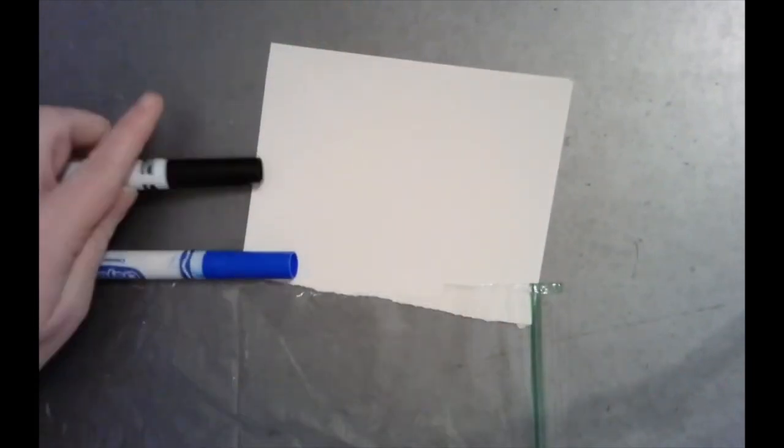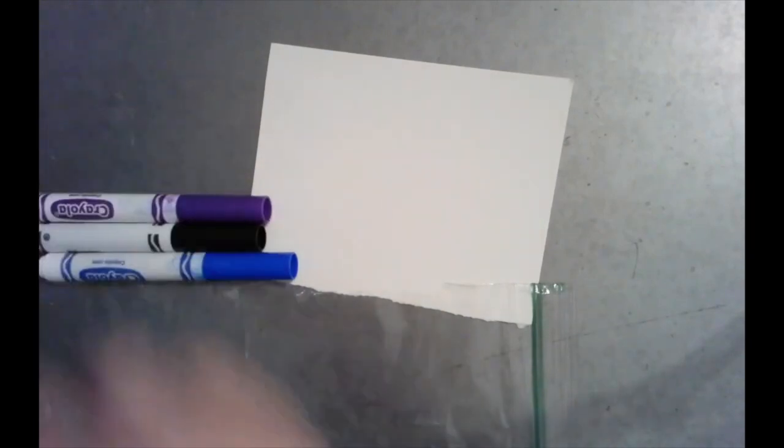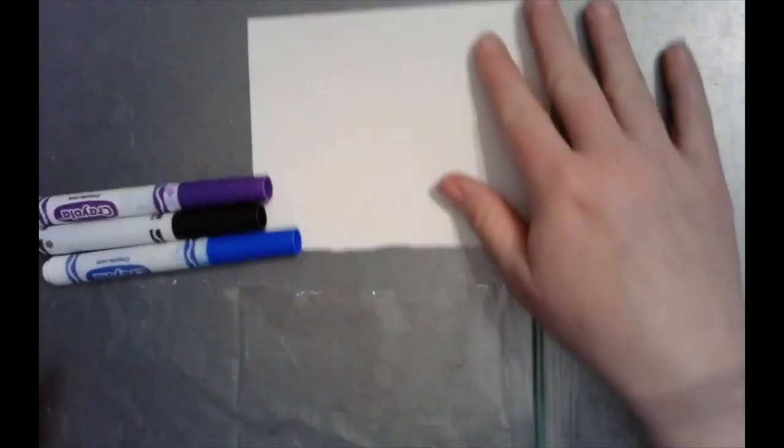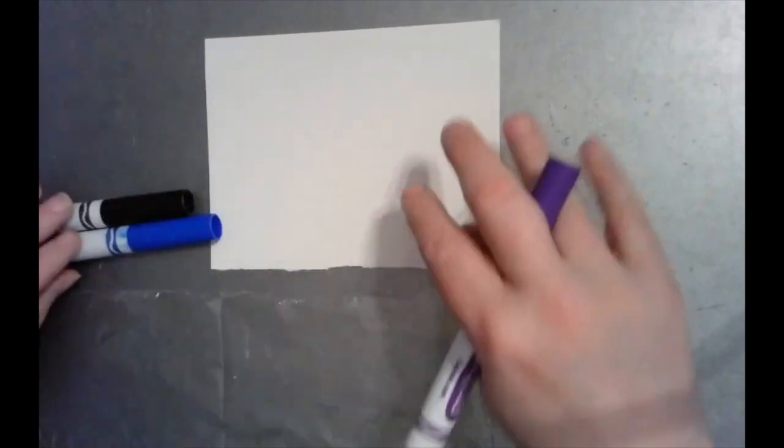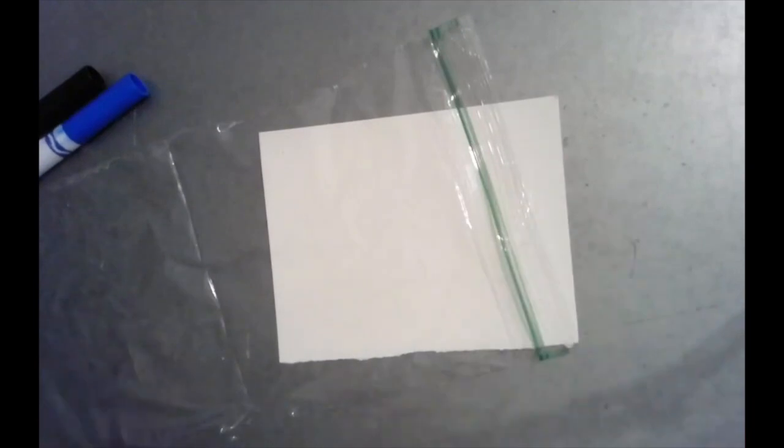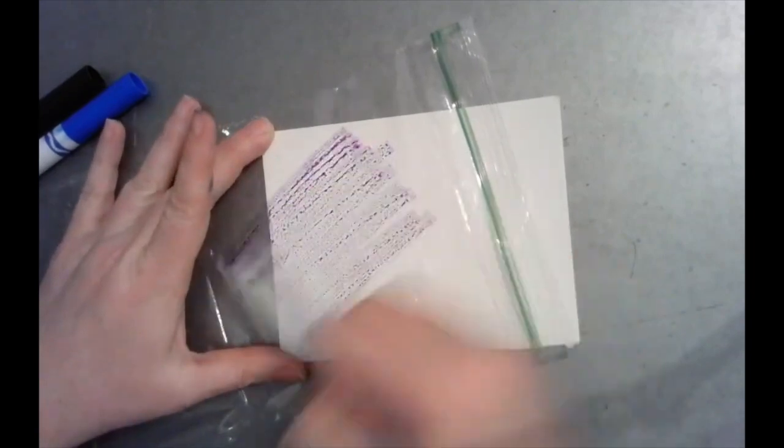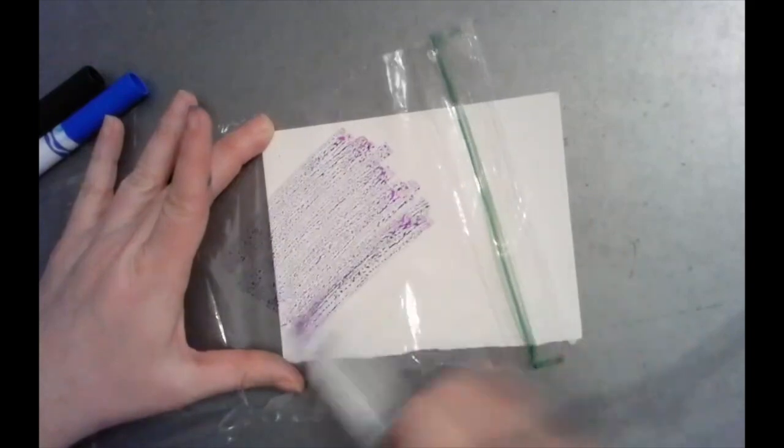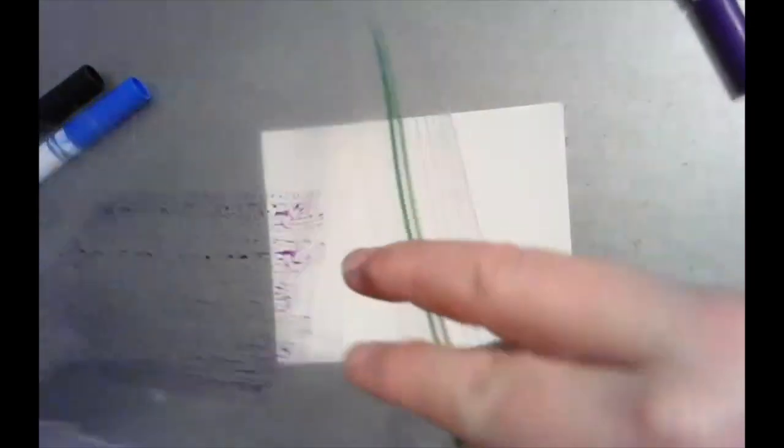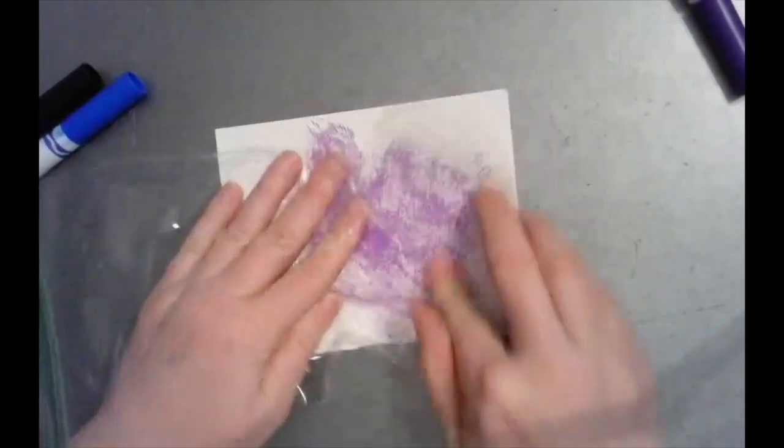We're going to use some washable markers. I'm going to use the blue, the black, and the purple. If you want to use green you can use green, but these are the colors I'm going to use today. We're going to start with the purple and this is not going to look pretty when we first start, but it will look awesome when we're done. I'm just going to color on my sandwich bag some purple and then I'm going to flip it over and smoosh that color on my white piece of paper.